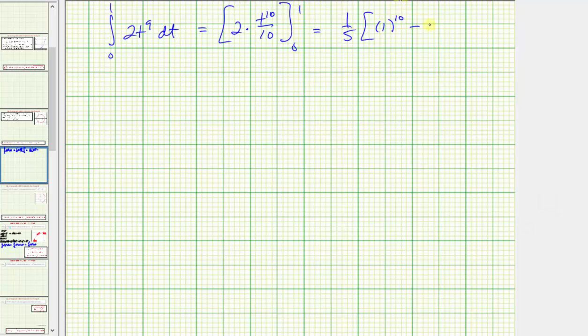And when t is 0, we just have 0 to the tenth, which gives us one fifth times 1, or just one fifth. This is the value of the given line integral. I hope you found this helpful.